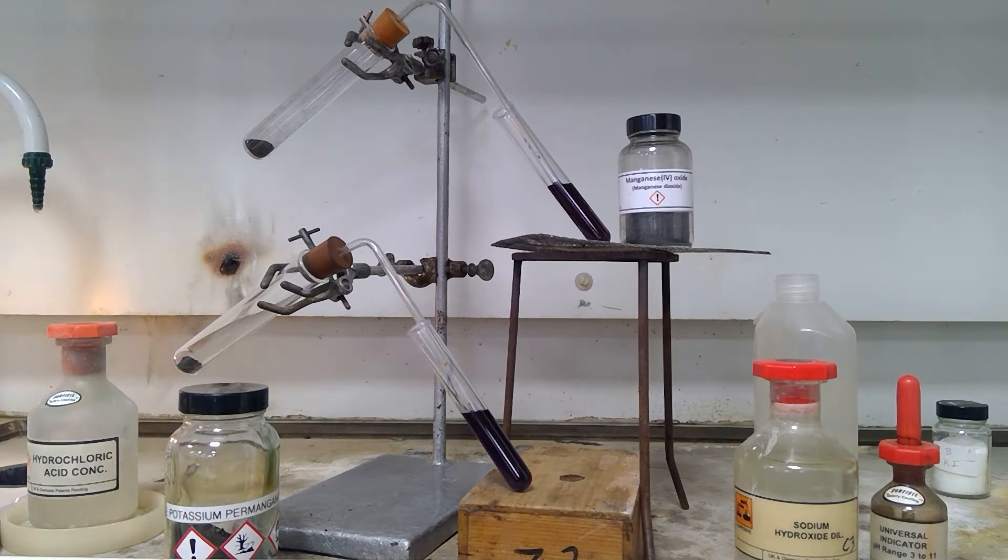The solid manganese compound is in the boiling tube on the left. Concentrated hydrochloric acid is going to be added. The potassium permanganate, potassium manganate 7, is on the left and is the lower of the two boiling tubes. The one at the top is manganese 4 oxide.